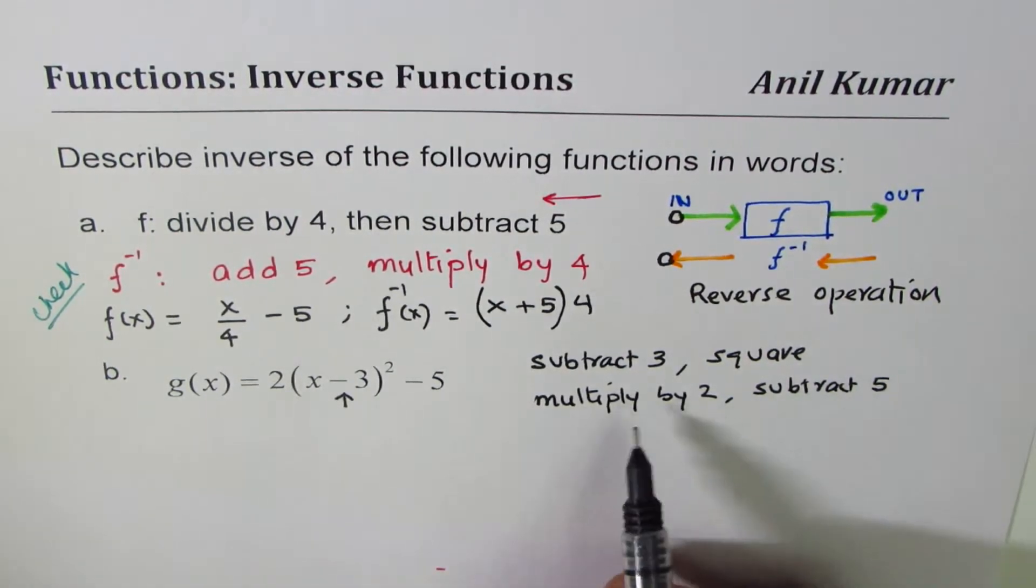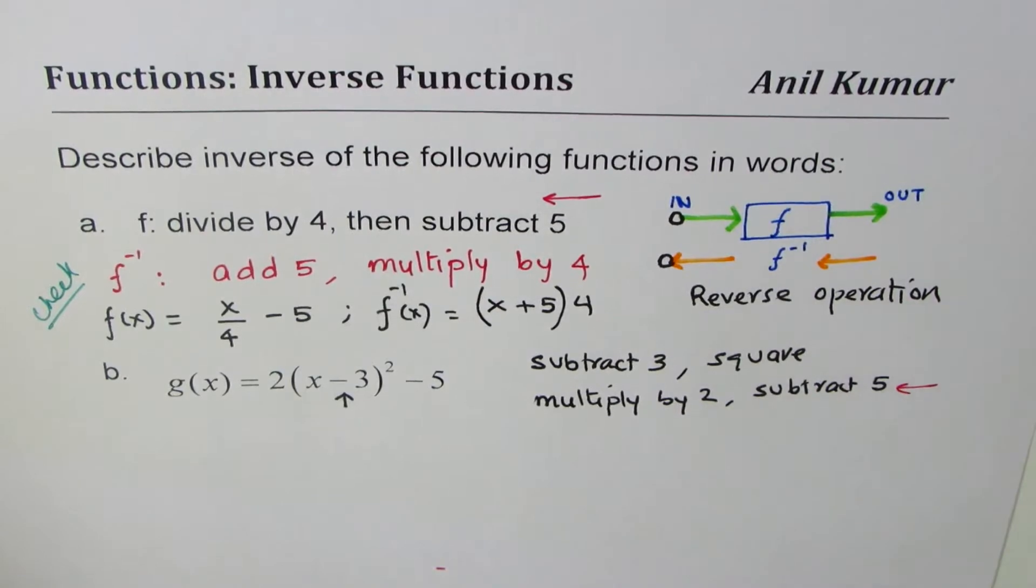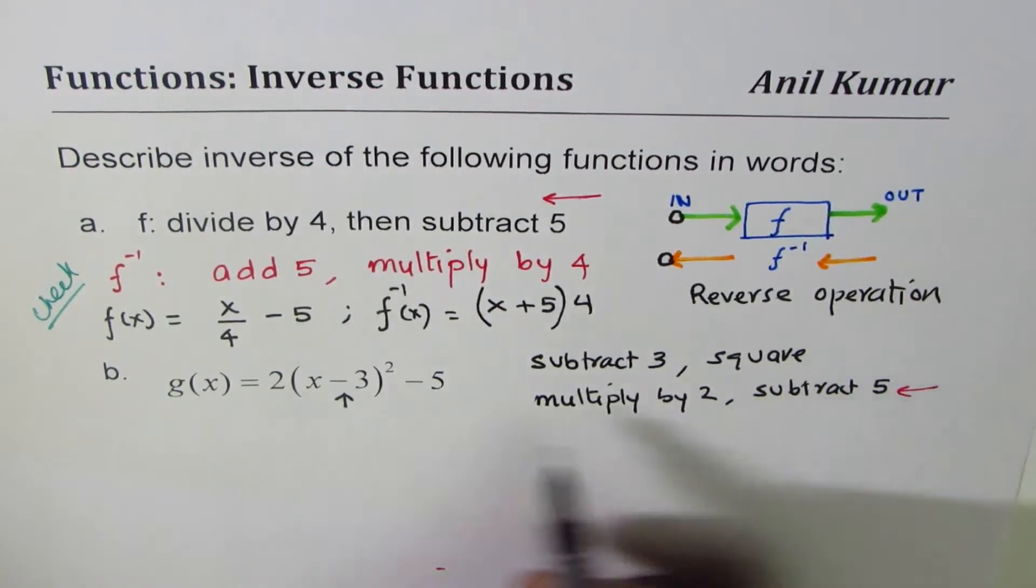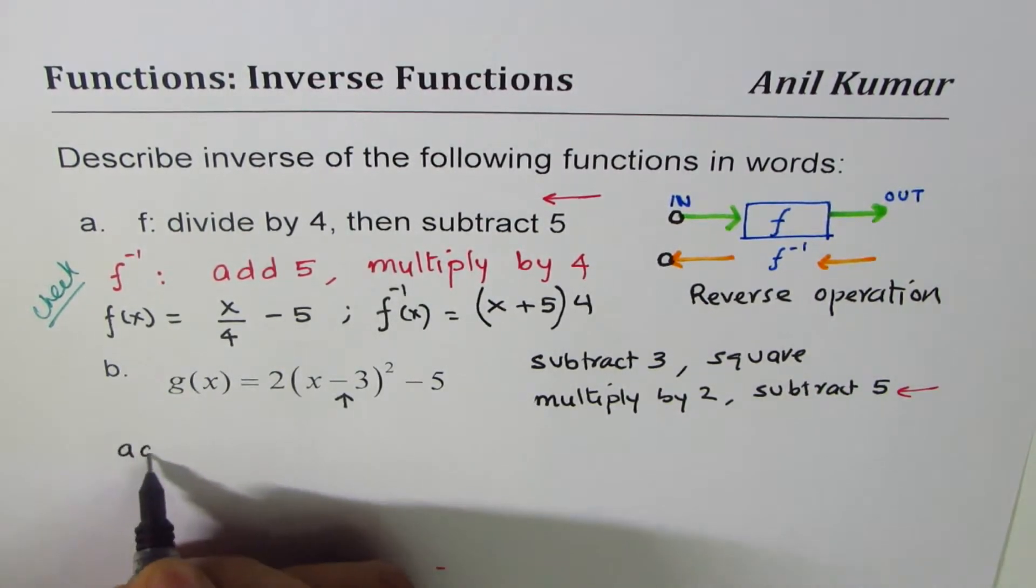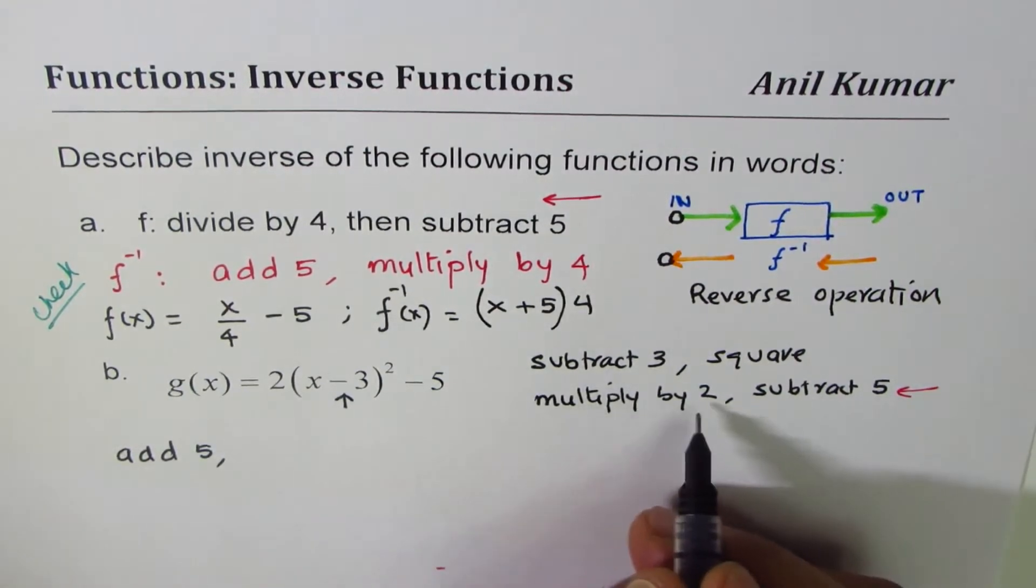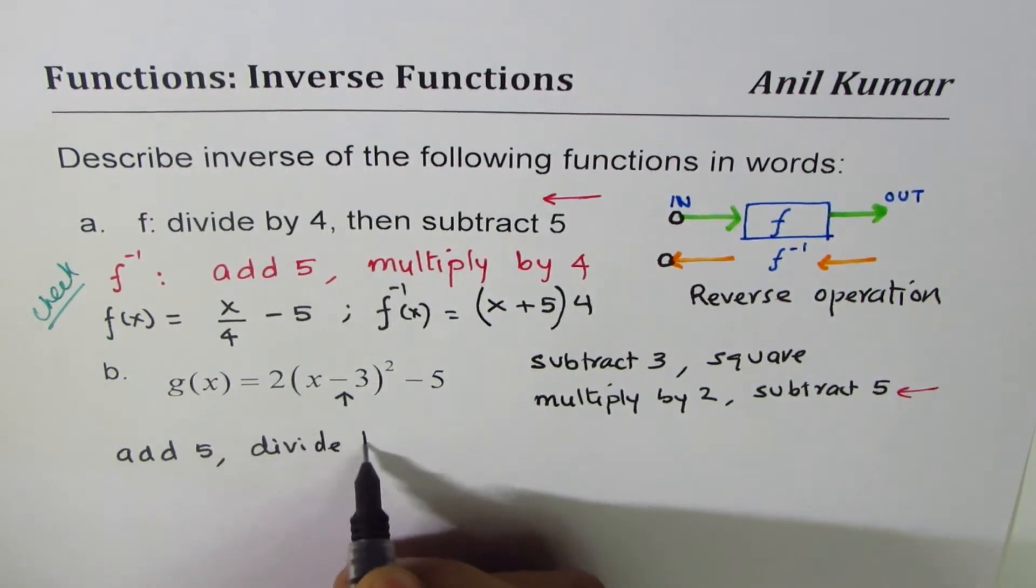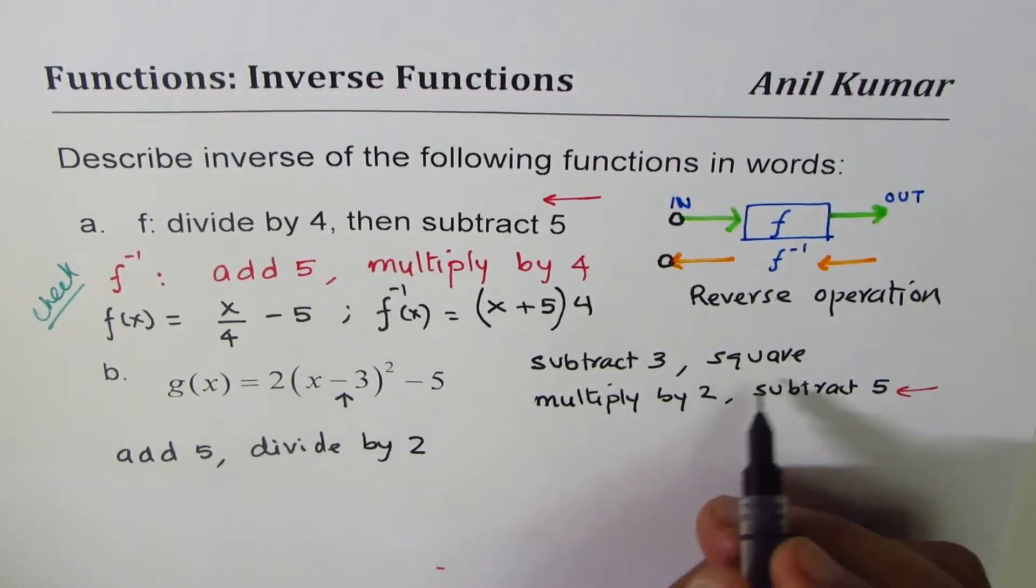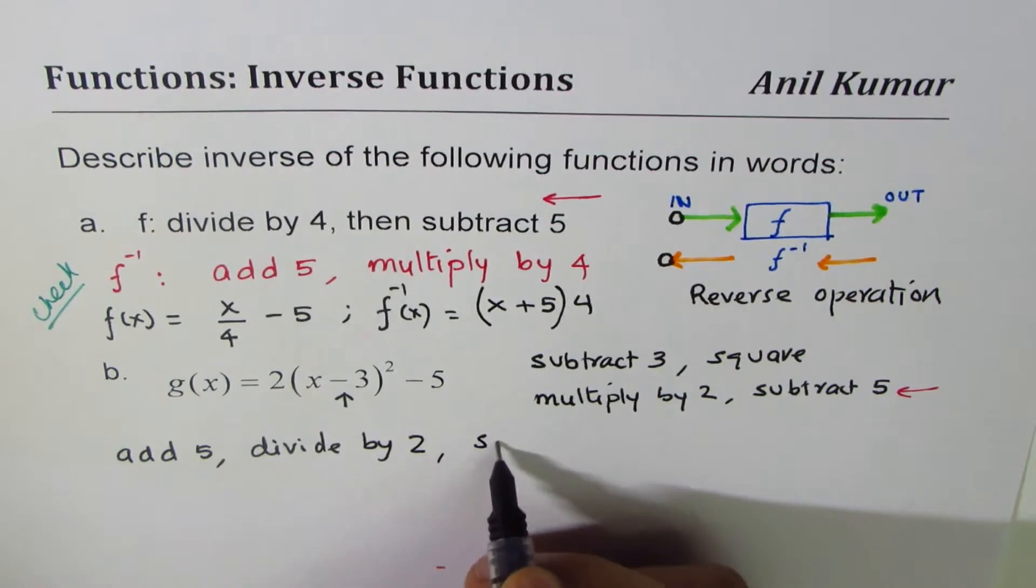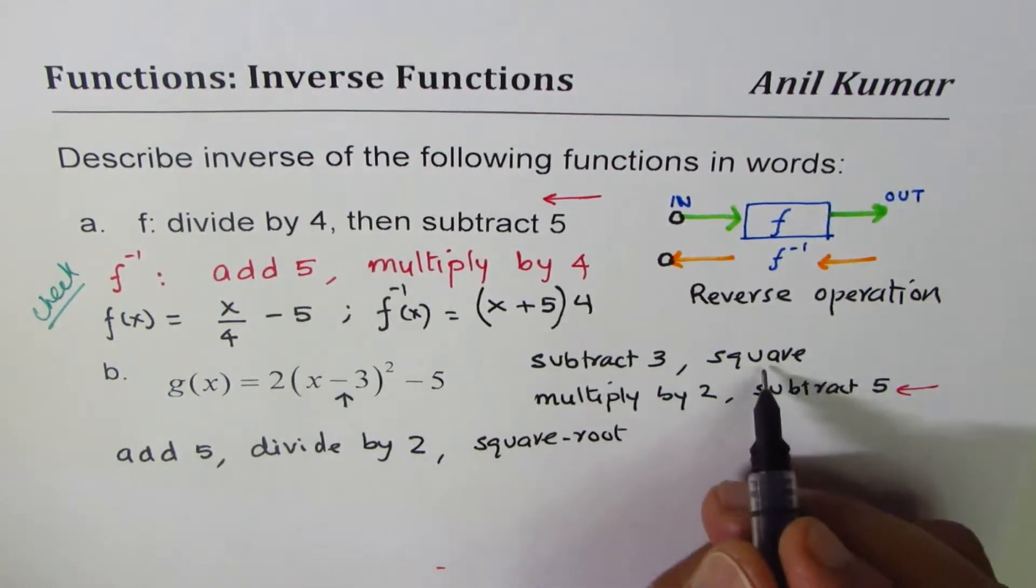Now if I have to do the reverse, I will do what? We'll start from this side, and we will write. Instead of subtract 5, I'll do add 5. And then instead of multiply by 2, I'll say divide by 2. And then square root, then we do square root.